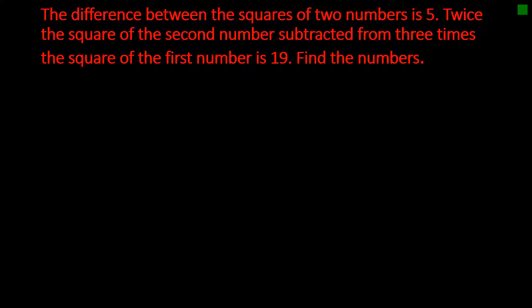Let's look at another one. The difference between the squares of two numbers is 5. Twice the square of the second number subtracted from 3 times the square of the first number is 19. Find the two numbers.